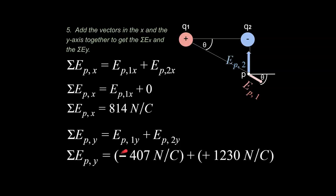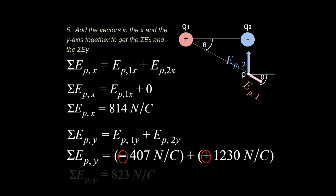The y-component of EP1 is going down — so we make it negative — because that part of the vector is in the negative y direction. EP2's contribution becomes positive, because earlier the negative sign indicated charge type, but now we're accounting for direction. These sign changes are important. Doing the math, the sum of the vectors in y equals 823 newtons per coulomb.